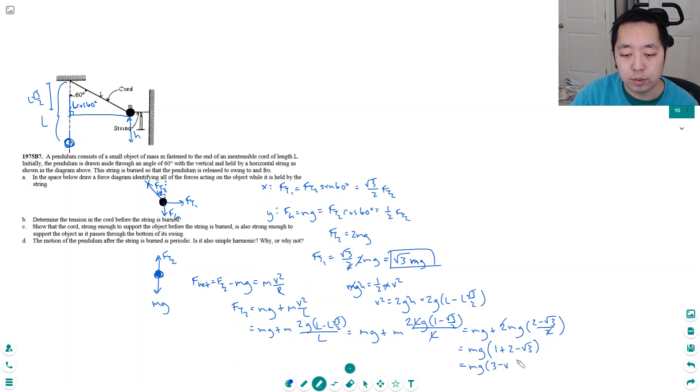I can factor out an mg, and this is equal to 1 plus—the 2's cancel here—1 plus 2 minus root 3. That's equal to mg times (3 minus root 3). Now what they said was the string was strong enough to support it at this point, and the string is supporting 2mg. So the question is, is 3 minus root 3—if you calculate it, square root of 3 is about 1.73, so this is about 1.27 mg, which is less than 2 mg. So we've demonstrated that if the tension could support 2 mg at the top, when it's down here it only has to support 1.27 mg, so the string also wouldn't break.